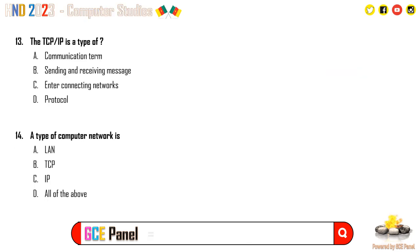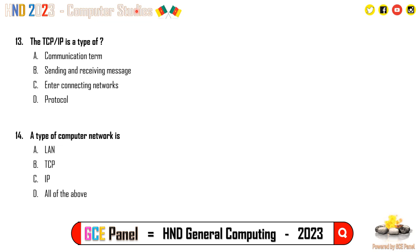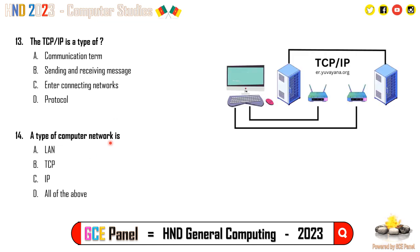Question 13: TCP/IP is a type of protocol. TCP stands for Transmission Control Protocol, and IP stands for Internet Protocol. TCP and IP are not computer networks — they are protocols. What we have here is LAN, which stands for Local Area Network. We also have the Wide Area Network and other networks.